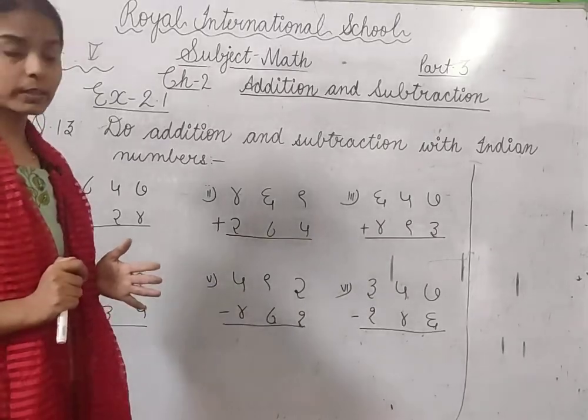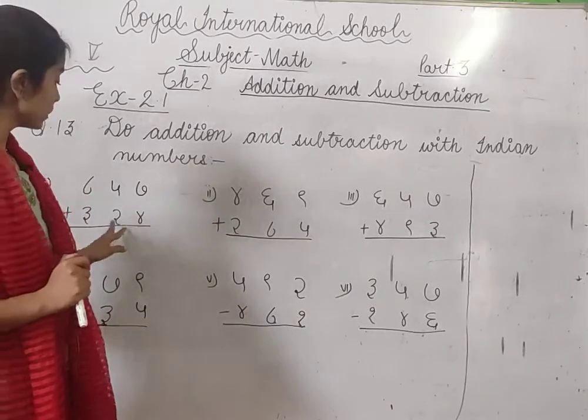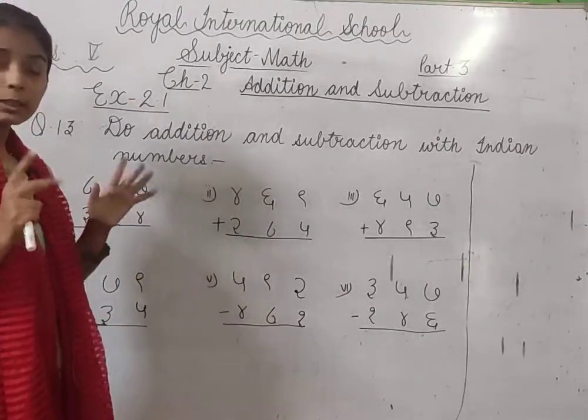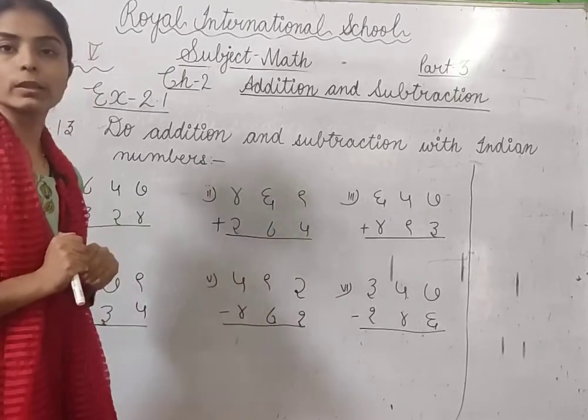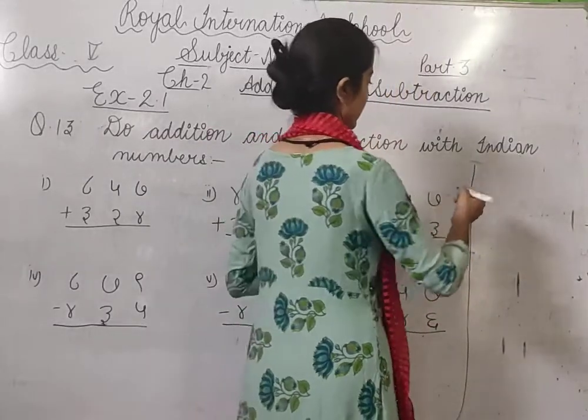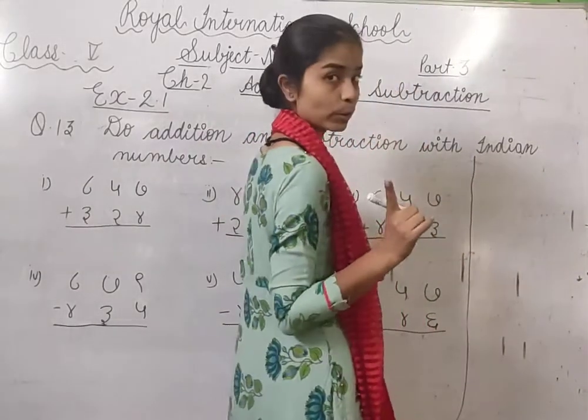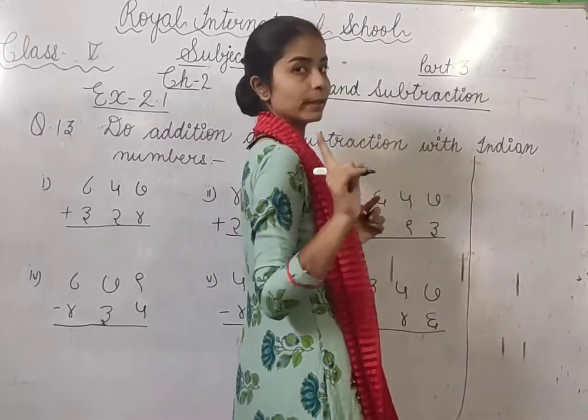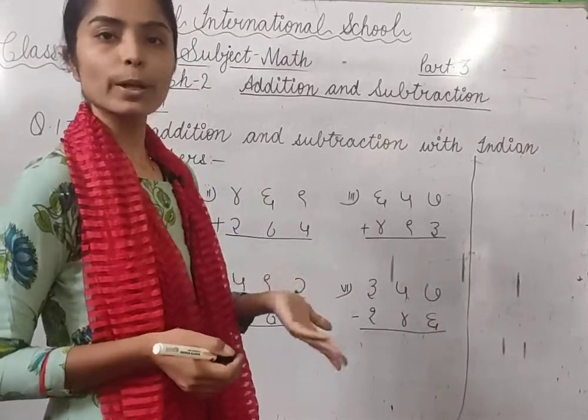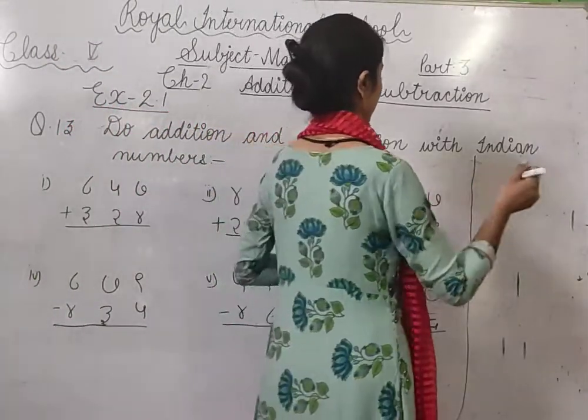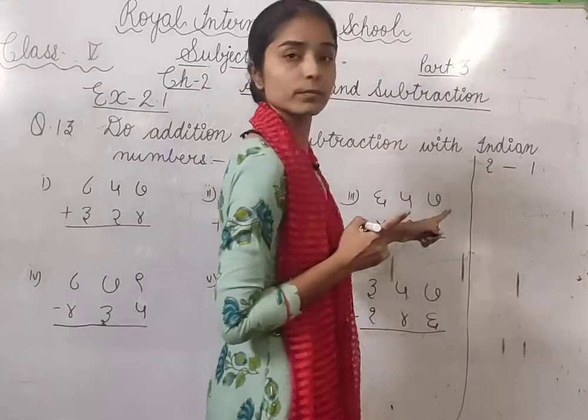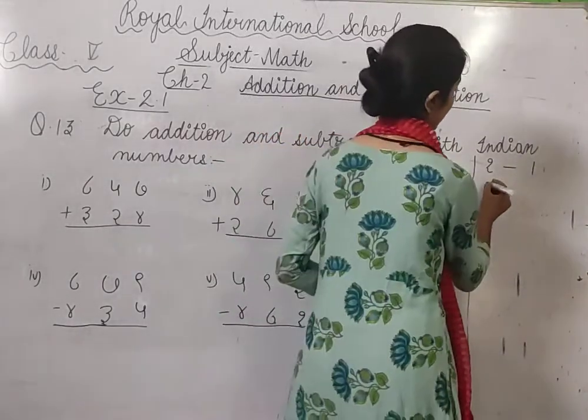Hindu Arabic numbers se hum addition and subtraction karna hai. Yeh aapka hai Indian number. Indian numbers means dekho Hindi mein jo ginti hoti hai na, woh is tarike ki hoti. Hindi ki jo kitab hai hoti na, us mein jo ginti hoti hai, woh is tarike ki hoti hai.